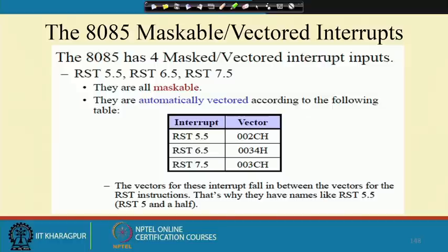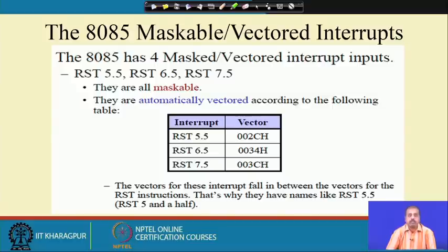In this RST category, the TRAP instruction is a non-maskable interrupt — you cannot mask it off. The interrupts RST 5.5, 6.5, and 7.5 are hardware interrupts, and they are maskable.